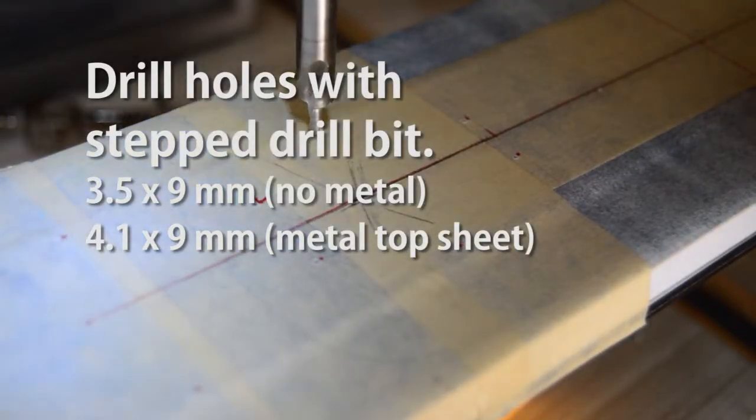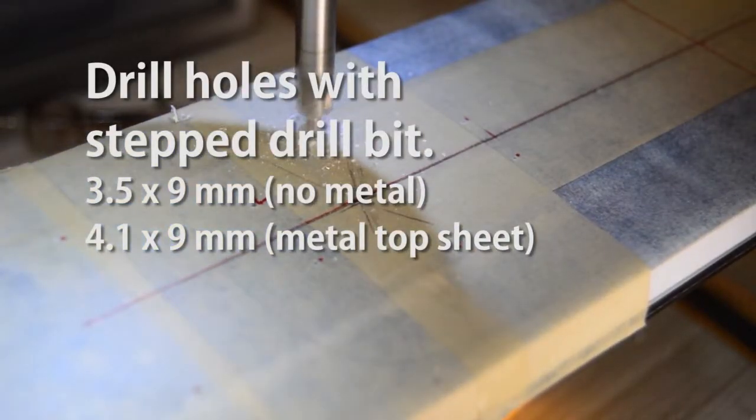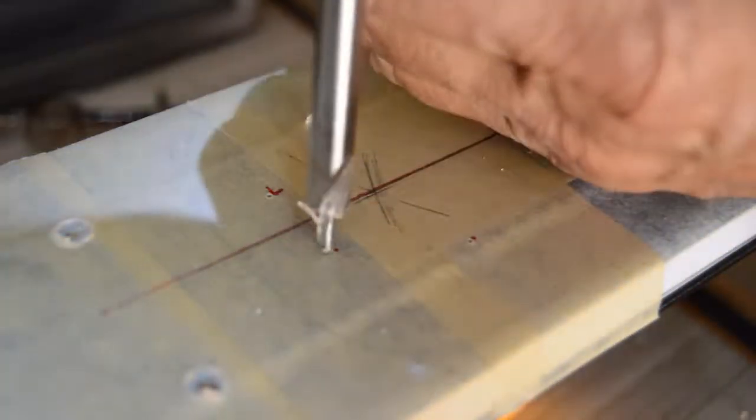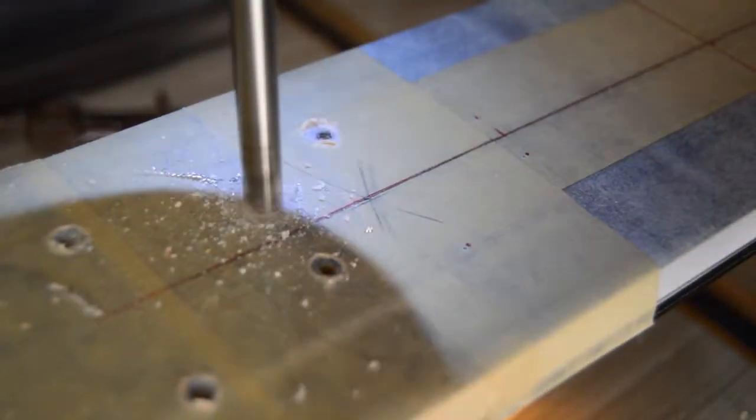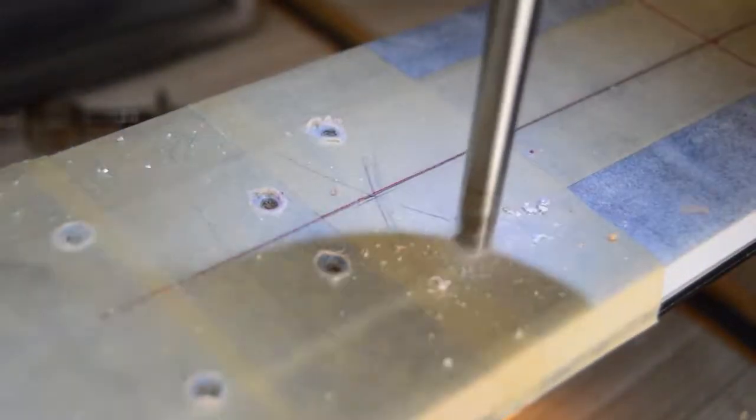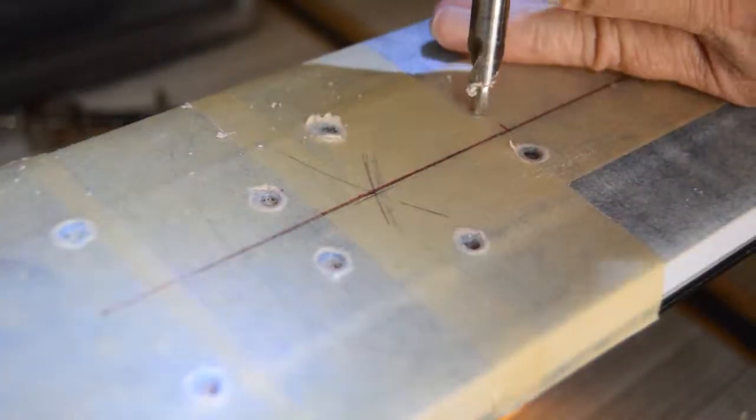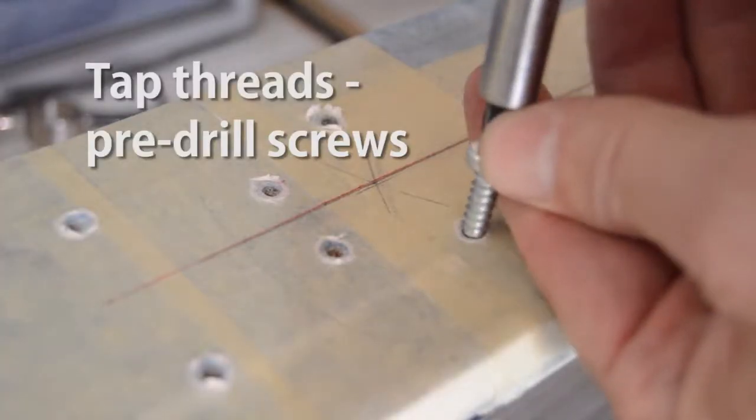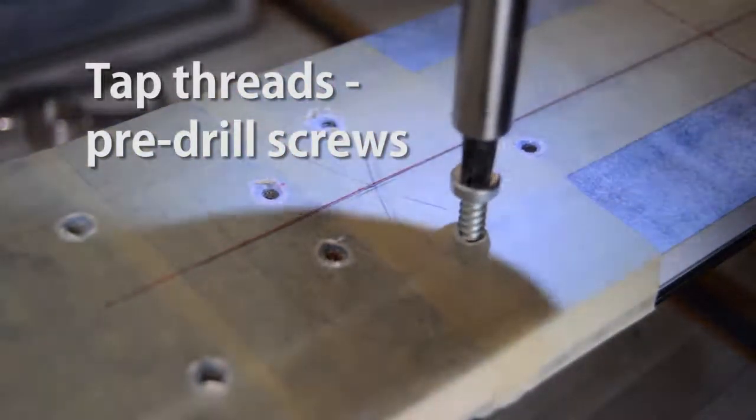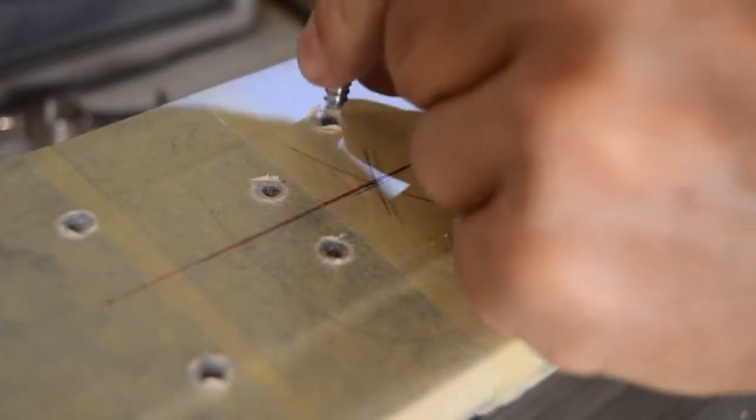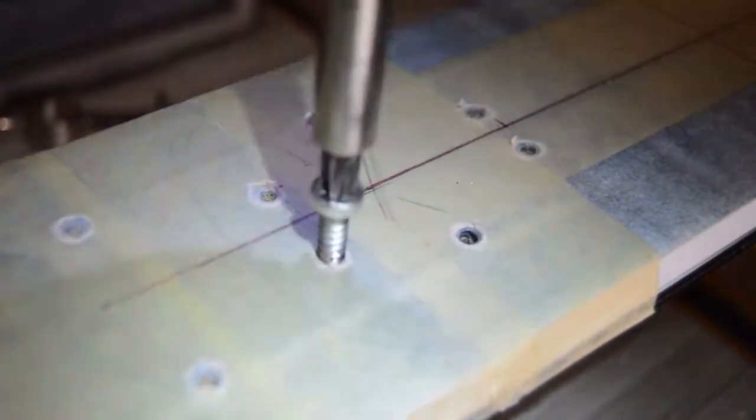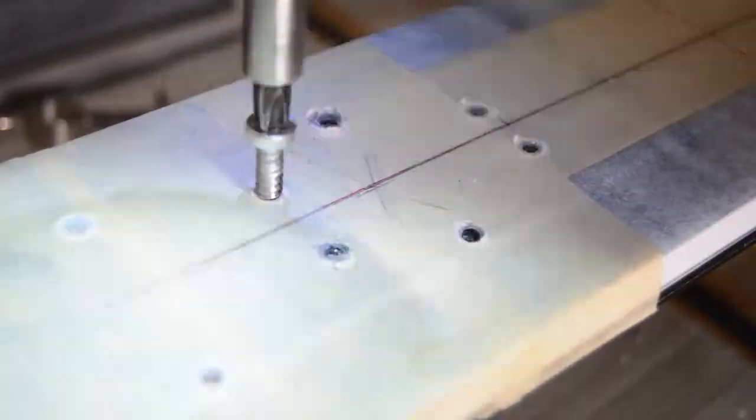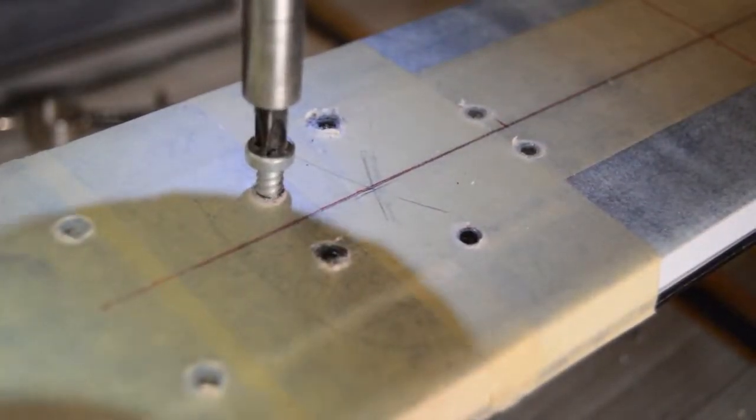Eight of them with a stepped drill bit. If you've got a wood core, no metal on the top sheet, I recommend a 3.5 by 9 millimeter drill. And then if there is a metal top sheet in the mounting zone, then I use a 4.1 by 9 millimeter. And then I like to kind of tap the threads just by taking one of the screws and going in a few threads and backing it out, just to make sure that the screws go in straight once I'm putting it all together.